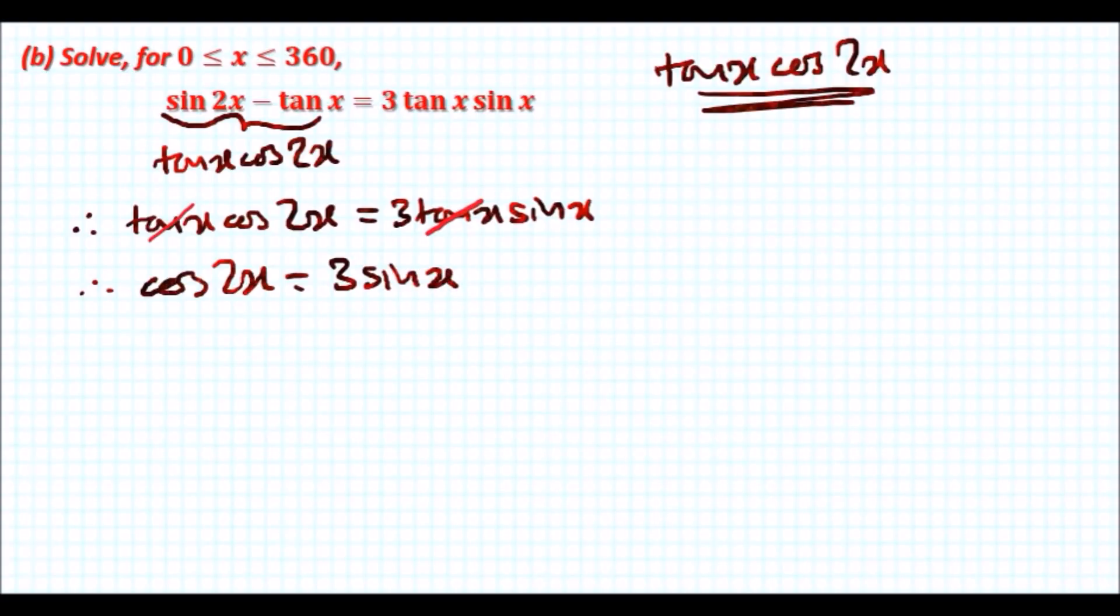This goes and this goes. Now we're left with cos 2x equals 3 sin x. Now you can't do much with sin x but cos 2x is the double angle so let's rewrite this into the other property.